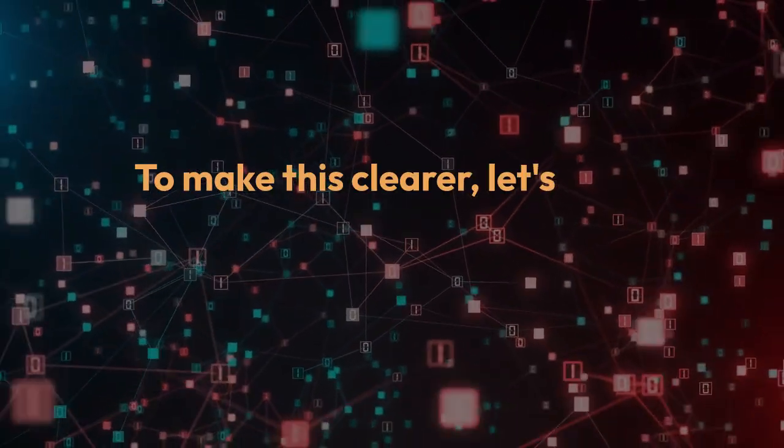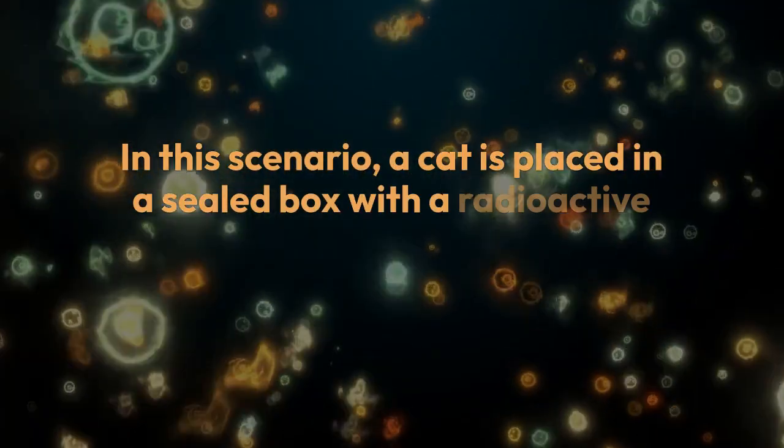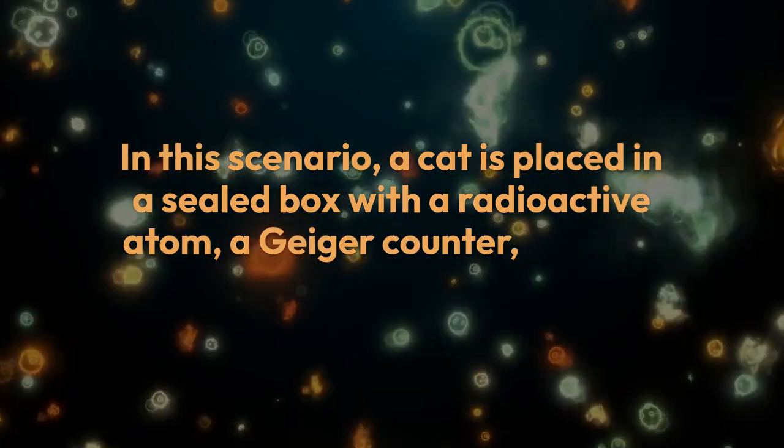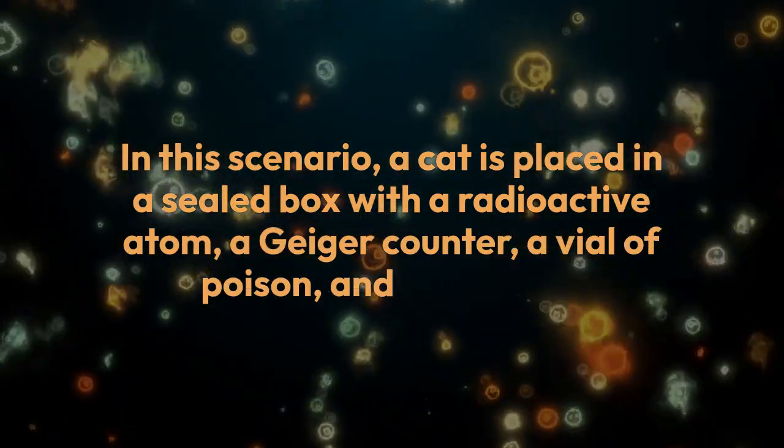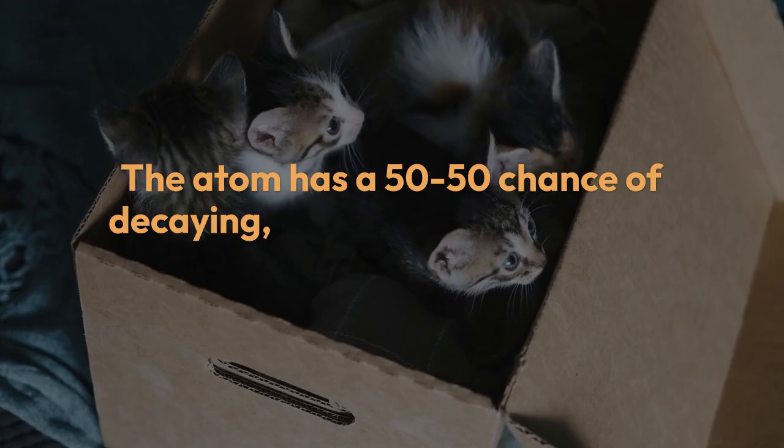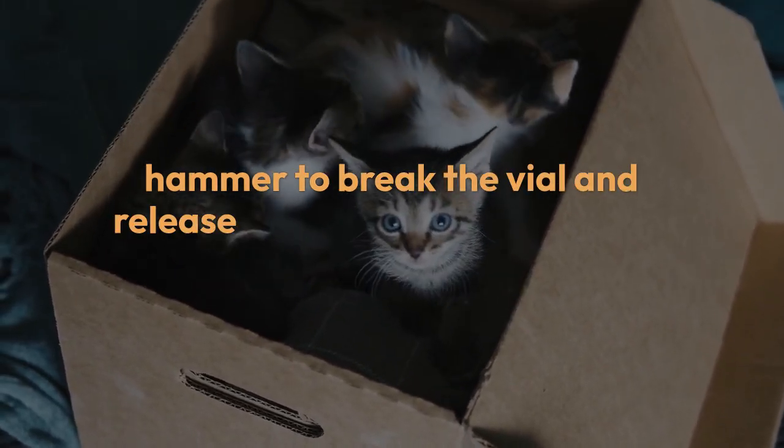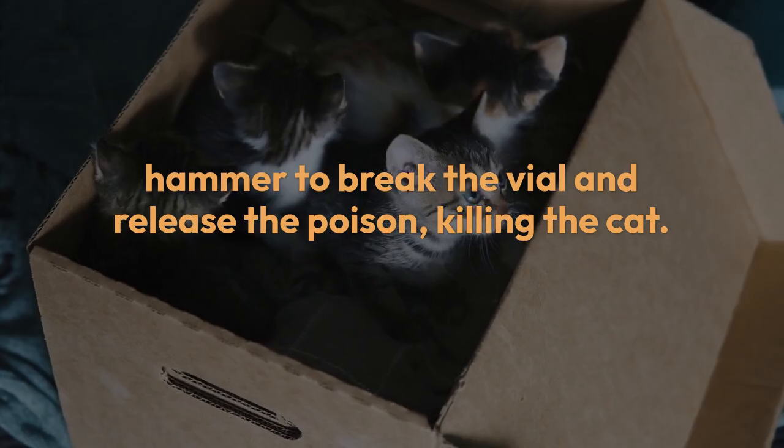To make this clearer, let's use a well-known thought experiment called Schrödinger's cat. In this scenario, a cat is placed in a sealed box with a radioactive atom, a Geiger counter, a vial of poison, and a hammer. The atom has a 50-50 chance of decaying, which would trigger the Geiger counter, causing the hammer to break the vial and release the poison, killing the cat.